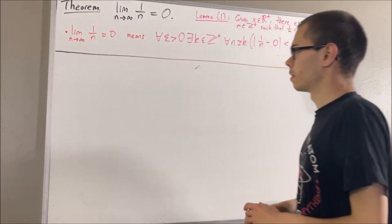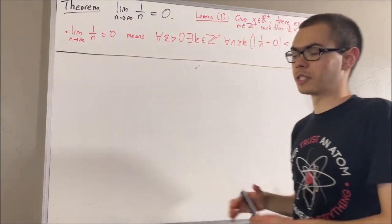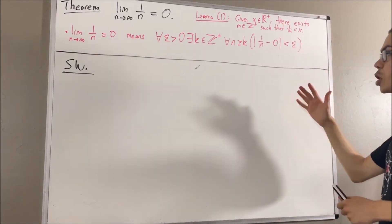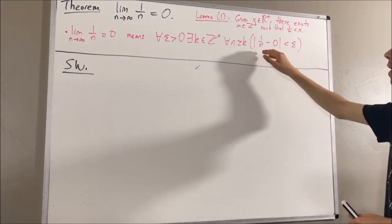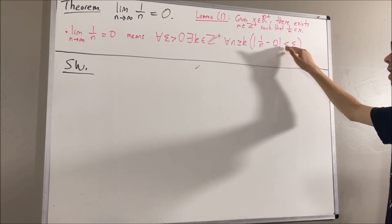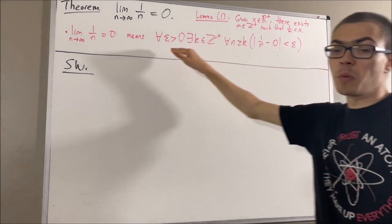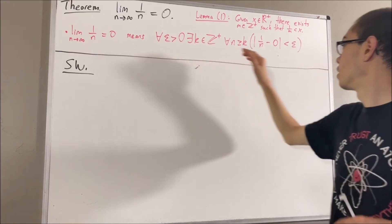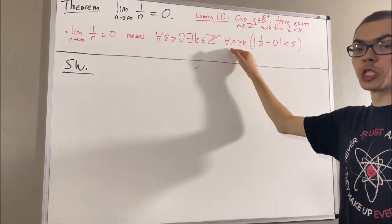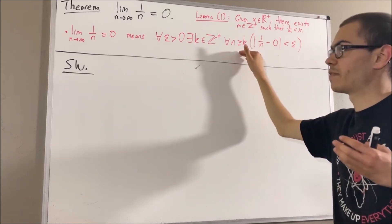Okay. But before we get into the proof, let's start out with some scratch work. What we're ultimately going to end up showing is that the absolute value of 1 over n minus 0 is less than epsilon, where epsilon is an arbitrary positive real number, and n is an arbitrary positive integer greater than or equal to some positive integer k.